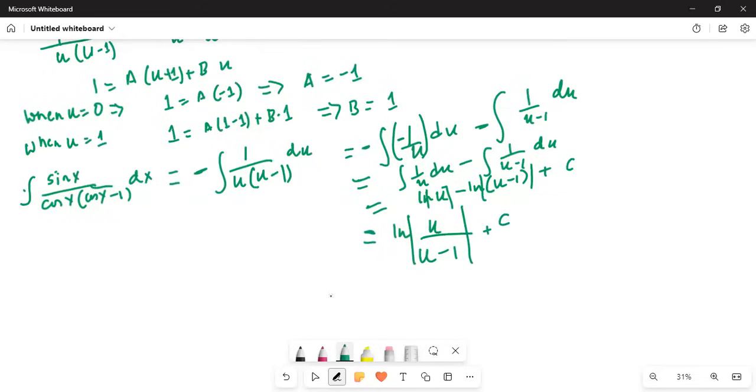Hence, the final answer is, if I substitute back the value of u: ln of cosine x divided by cosine of x minus 1 absolute value plus c. So this is the final answer for integration of sin x divided by cosine x times cosine x minus 1 dx.